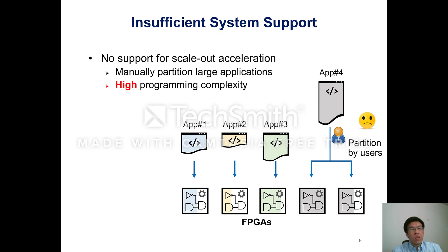Moreover, the commercial FPGA compilation tool can only map one application onto a single FPGA device. Thus, if users want to improve performance by using multiple FPGAs, they need to manually partition the applications and carefully handle the inter-FPGA communication, which leads to high programming complexity for scale-out acceleration.